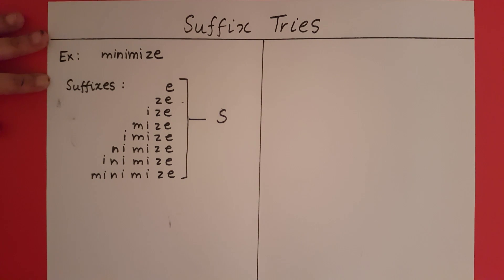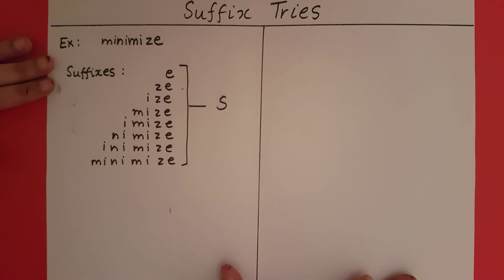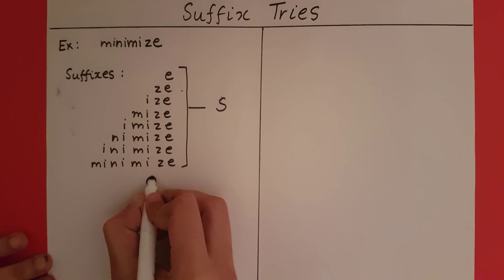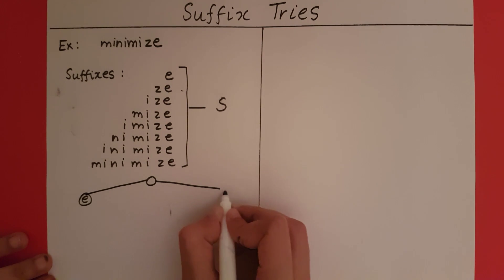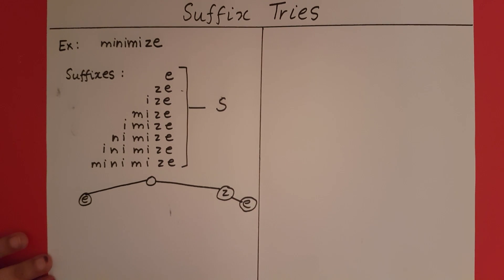Let's start by drawing the standard trie for this. I'm going to start with the root, then we have just an e, then we have ze, then we have ize, then we have mize.